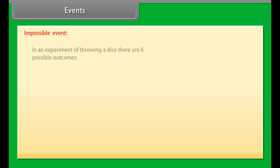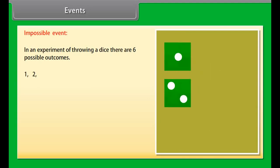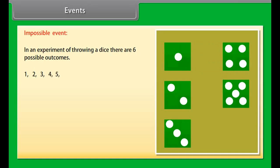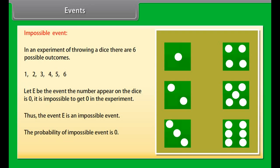Impossible event: to understand it, let's take an example. In an experiment of throwing a dice, there are 6 possible outcomes: 1, 2, 3, 4, 5, 6. Let E be the event that the number appearing on the dice is 0. It is impossible to get 0 in the experiment. Thus, the event E is an impossible event. The probability of an impossible event is 0.